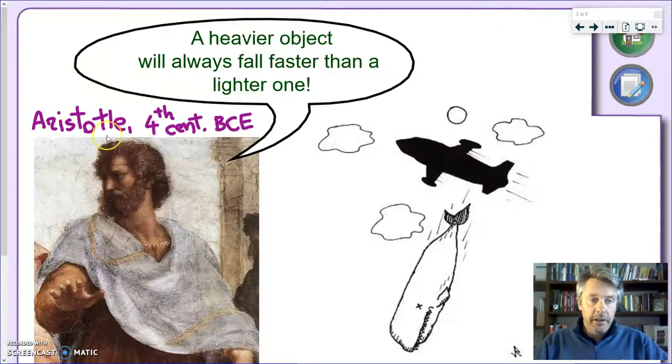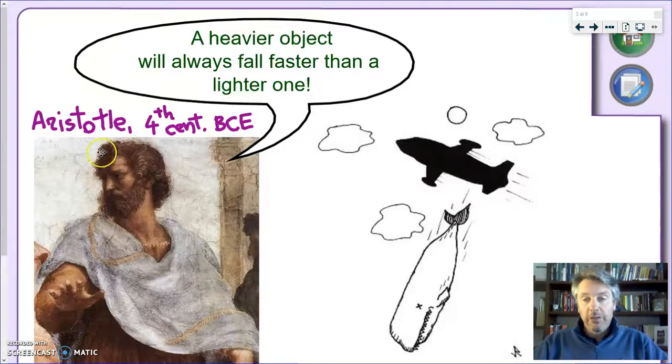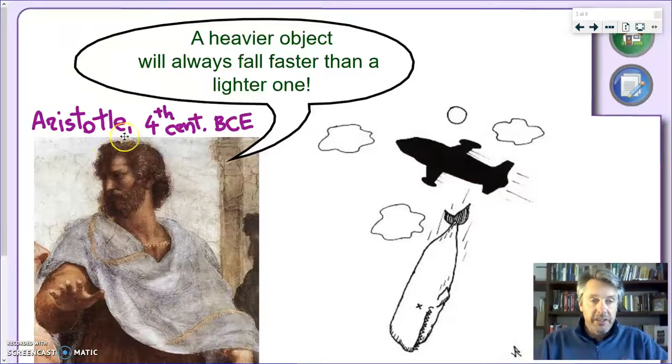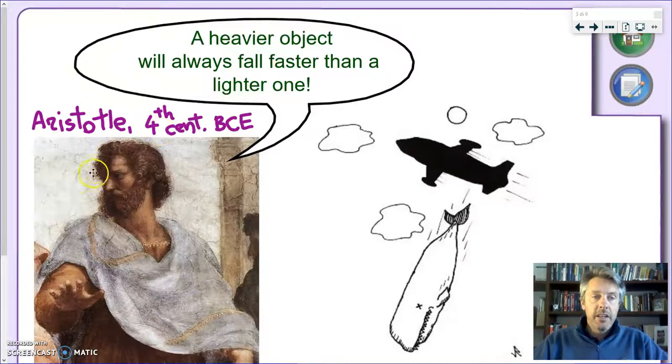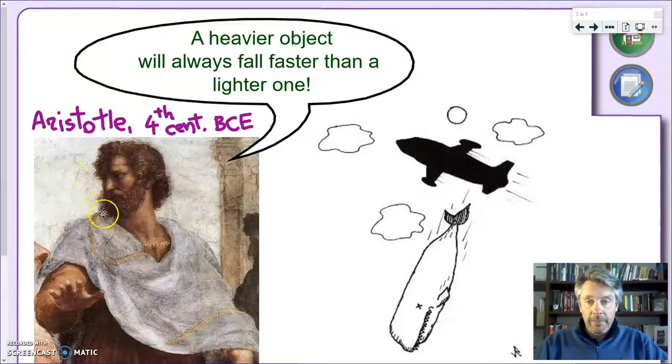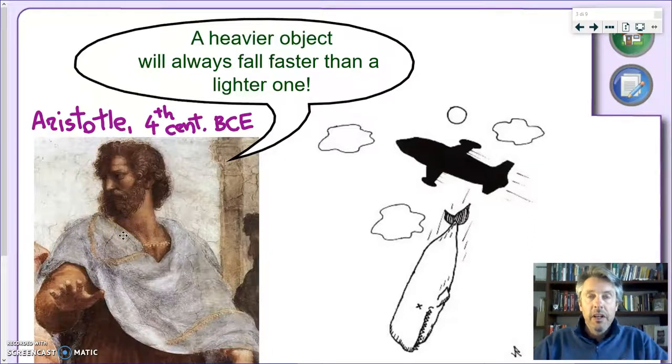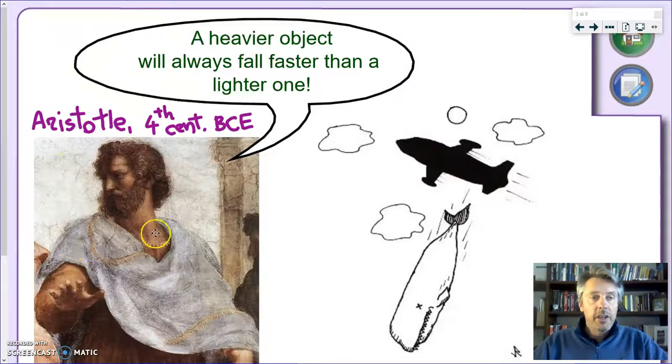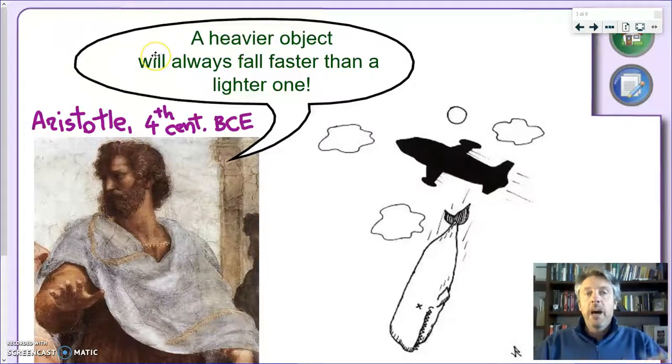And for this reason, this guy here, Aristotle, probably the most famous Greek philosopher, and at the time you could also say that he was a scientist. He came from 4th century BCE. And here you can see him depicted by Raffaello Sancio. And if you want to see, this is a beautiful fresco, which is in the Vatican Museums in Rome. It has all the major Greek and Roman and other philosophers. It's called the School of Athens. So, Aristotle said, according to him, a heavier object will always fall faster than a lighter one. And this makes sense.